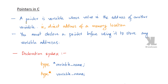A pointer is a variable whose value is the address of another variable. The value of another variable is the address of another variable. Address means memory location. So the direct memory location is the pointer variable's value.